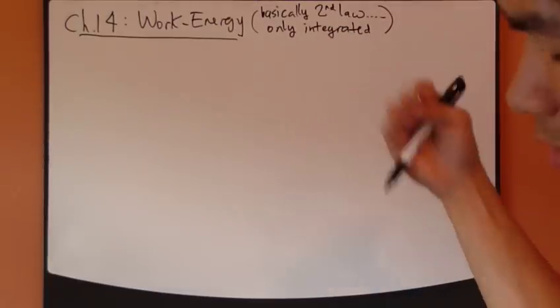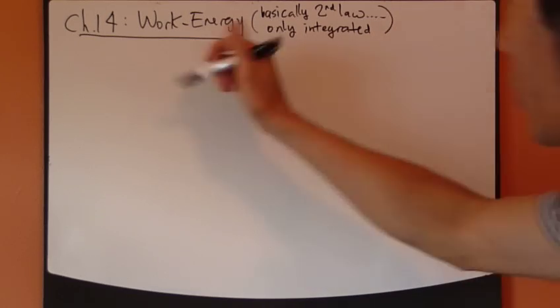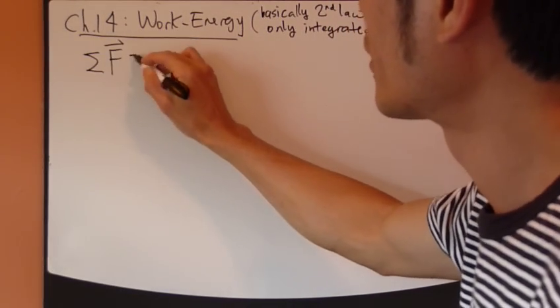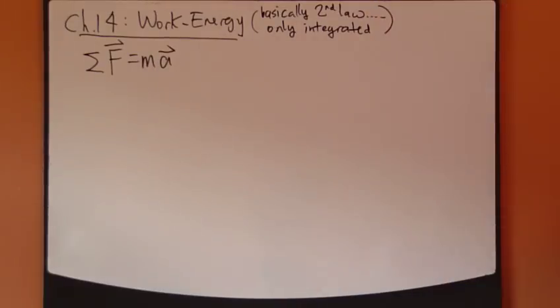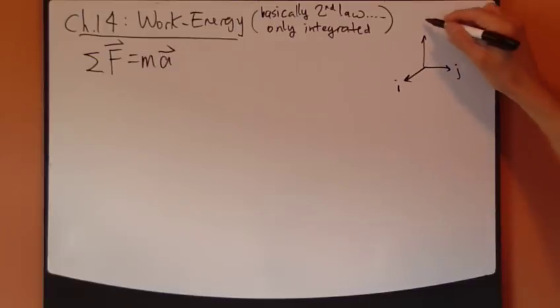Let's look at how we integrate. Newton's second law is a vector equation that goes like this, right? Now, we can write it in the x, y, and z component. So, let's work in Cartesian coordinate system with i, j, and k unit vectors.